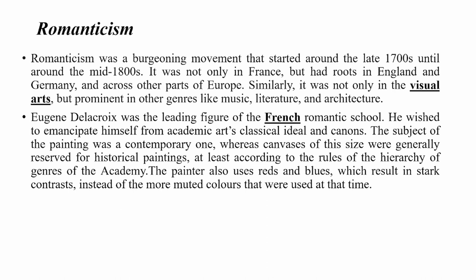He wished to free himself from academic art's classical ideals and canon — he was against the classical ideals of painting. The subject of his painting was a contemporary one, whereas he chose canvases of the size generally reserved for historical paintings at that time. Here we can see the painter uses dark colors like red and blue, instead of the more muted or dull colors used at that time.